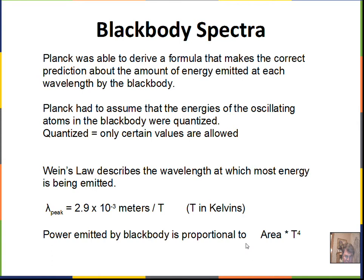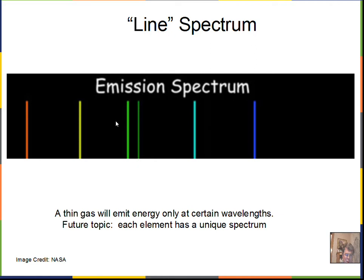The blackbody spectrum is a continuous spectrum with light at all wavelengths. But emission spectra studied in the 1800s showed something different — using a thin gas, the gas emits light at only certain wavelengths and frequencies, corresponding to certain energies. These emission line spectra are fingerprints for elements: each element has a different pattern of spectral lines.